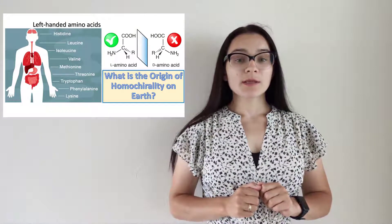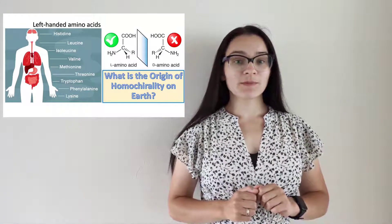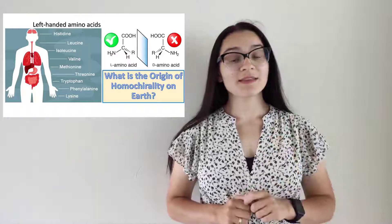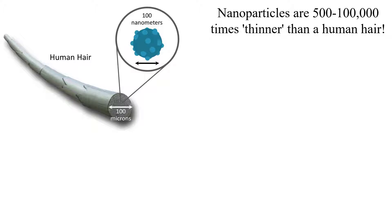But how can we take a step forward toward a better understanding of this phenomenon? Let's take a look at the nanoscale. Nanoparticles size of 1 to 100 nanometers, which is 100,000 times thinner than a human hair. And yes, nanoparticles could also be chiral.